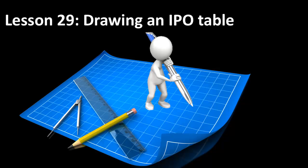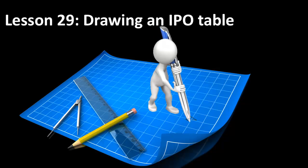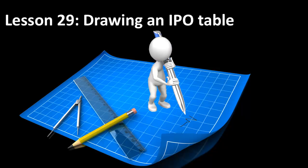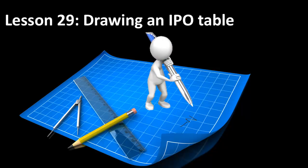I'm now ready for lesson 29. In lesson 28, I explained that the program has three major parts, namely input, processing, and output. In this lesson, I will show you how to plan your applications by laying out the input, processing, and output into a diagram called an IPO table.